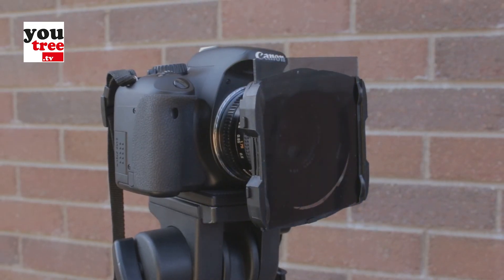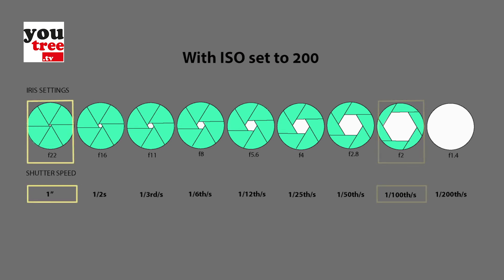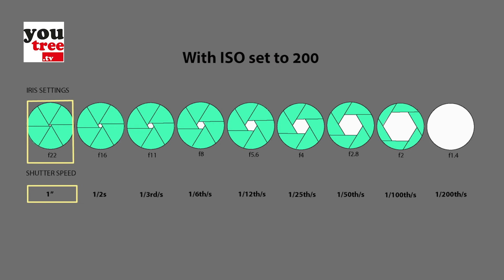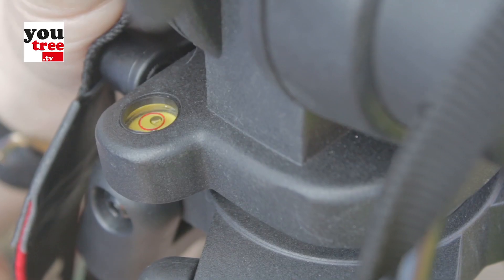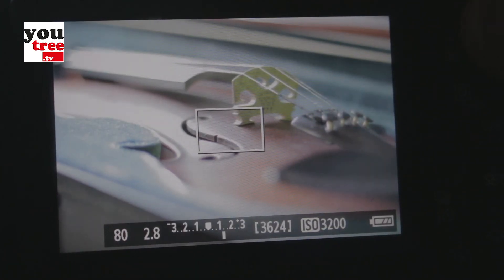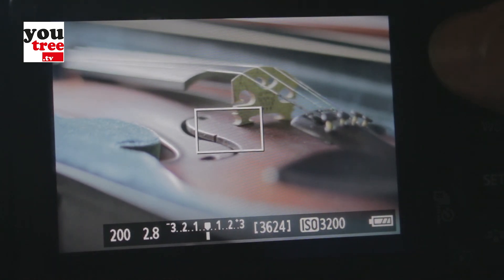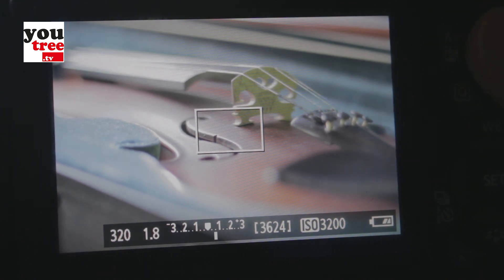If you needed an f-stop of f22 and the camera had a shutter speed of 1/100th of a second at f2, you would end up with a shutter speed of 1 second at f22 with ISO set at ISO 200. You would need to attach the camera to a tripod to stop camera movement. If that is not possible, you would need to change the shutter speed to around 1/6th of a second to stop camera shake, and increase the ISO to get a correct exposure — though this would affect the quality of the image.